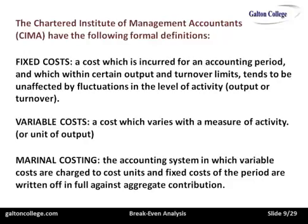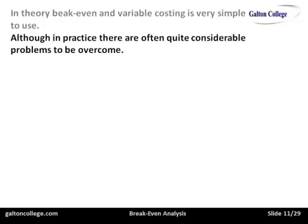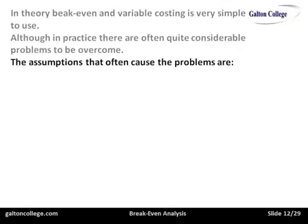Although the three of these sound somewhat complex, they're actually straightforward. Fixed costs are fixed. Variable costs are — you guessed it — they're variable. And marginal costs just means working out the costs of the product to make it, looking at the selling price and ensuring that the selling price is more than the cost, selling as many as possible, and at the end of the period, paying off the fixed costs — and the residual is profit. In theory, it's a very simple technique to use. In practice, there are problems, but it is fairly straightforward. The assumptions that are made often cause the problems.